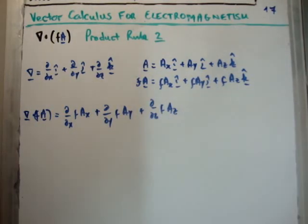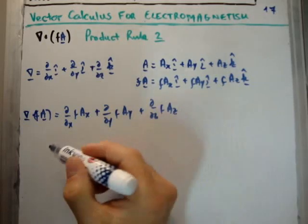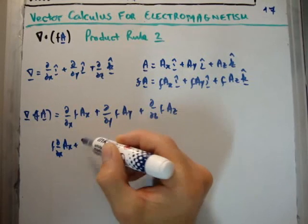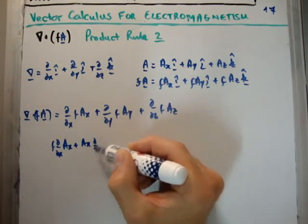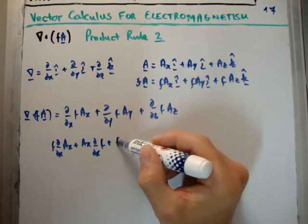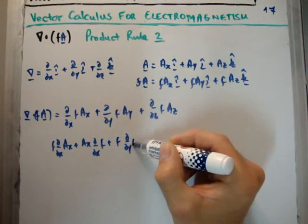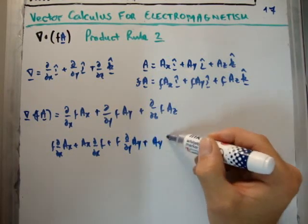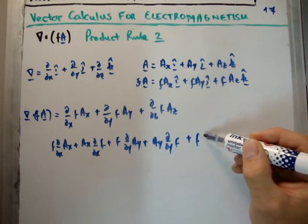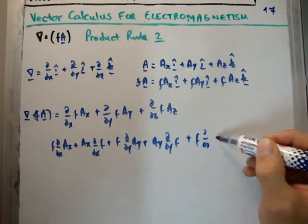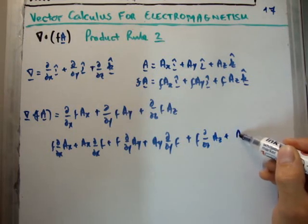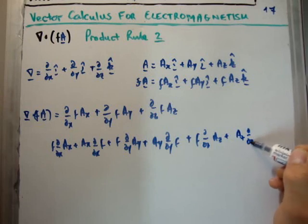So just be nice and slow when you do these. We're going to get f del/del x a sub x, plus a sub x del/del x of f, plus f times del/del y of a sub y, plus a sub y del/del y of f, plus f times del/del z of a sub z, plus a sub z del/del z of f.